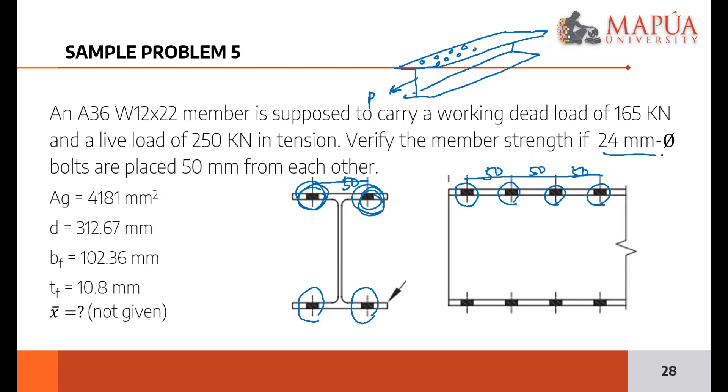The 24 here is the diameter of the bolt, d-bolt. If that's d-bolt, what's the d-effective? How much is d-effective? 24 plus how much? Five. Since this is 24mm, that's already large. As per code provision, when the diameter of the bolt is 24 and above, the d-effective would be plus 5mm.